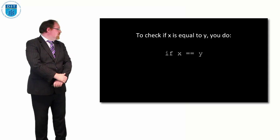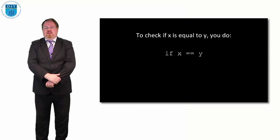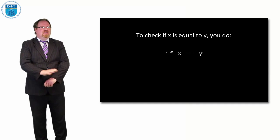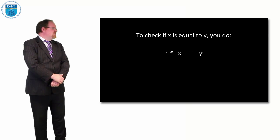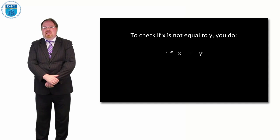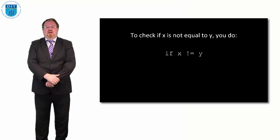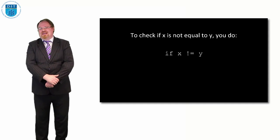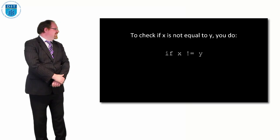If I want to check if x is equal to y, it's equals equals for the equals sign, because we know that the equals sign is used for assignments, so equals equals is equals. If I want to check if x is not equal to y, it's simply x exclamation mark equals y, or pling equals y, sometimes it's called.